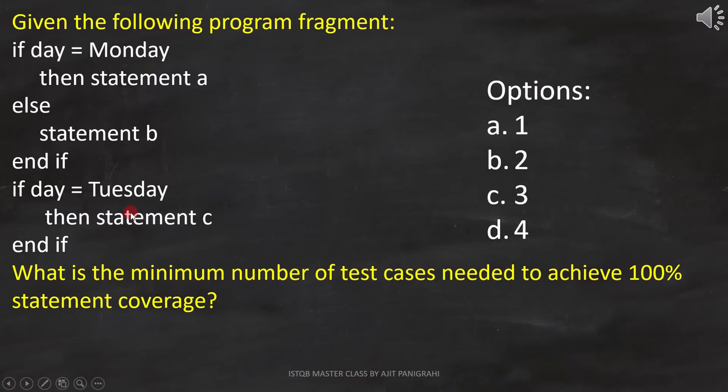Now let's analyze the code and draw a flowchart to get the answer. The first line is if day equals to Monday. Since it is a condition, we have to represent it like this on flowchart.